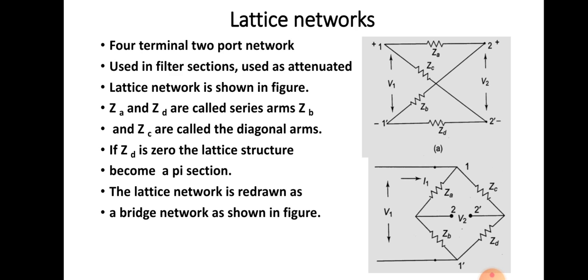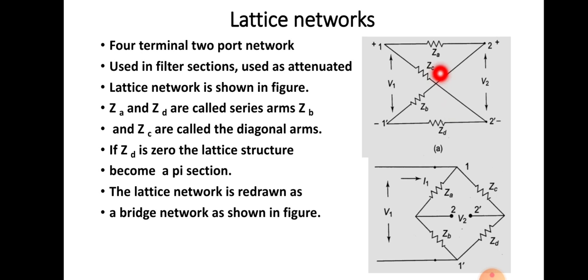A basic structure of the lattice network is shown here, where the different impedances are ZA, ZB, ZC, and ZD. ZA and ZD are called series arms, and ZB and ZC are called diagonal arms.